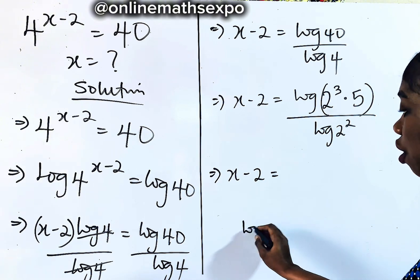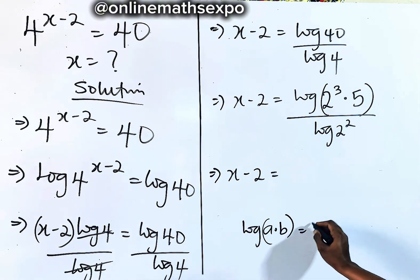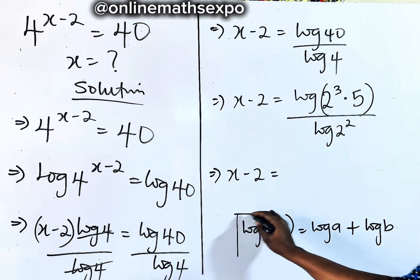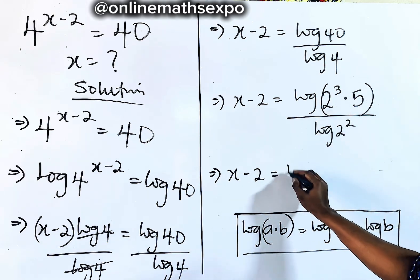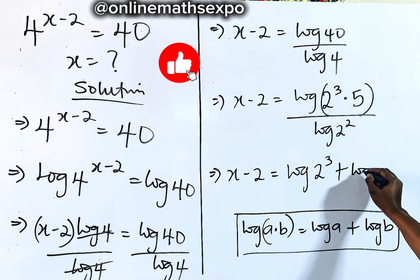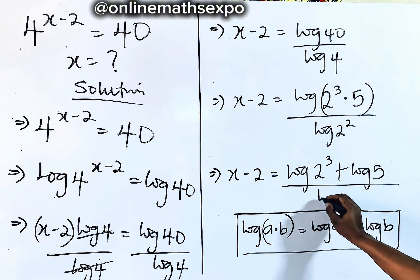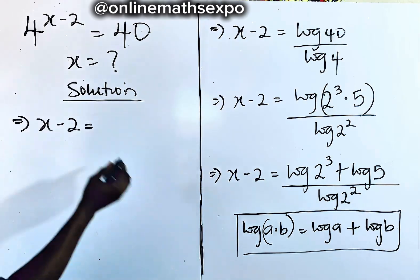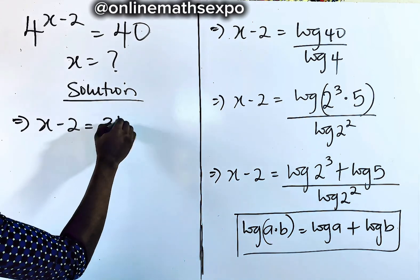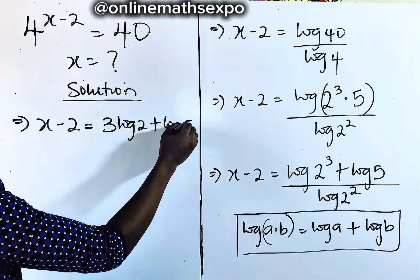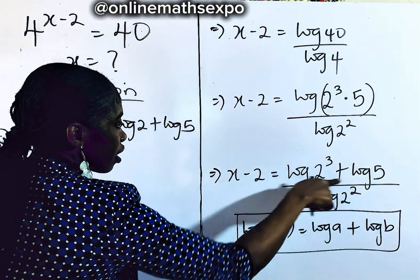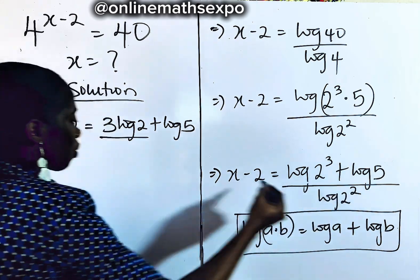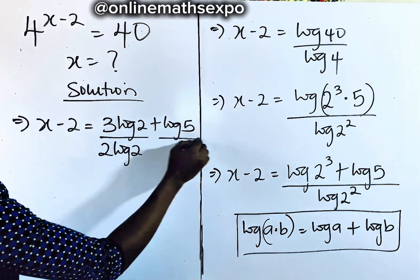Now remember: for every log of a multiplied by b, multiplication turns to addition. So we're going to have log of 2 cubed plus log of 5, all divided by log of 2 squared. Applying the power rule, the power multiplies the log, giving us 3 log 2 plus log 5 in the numerator, and 2 log 2 in the denominator.